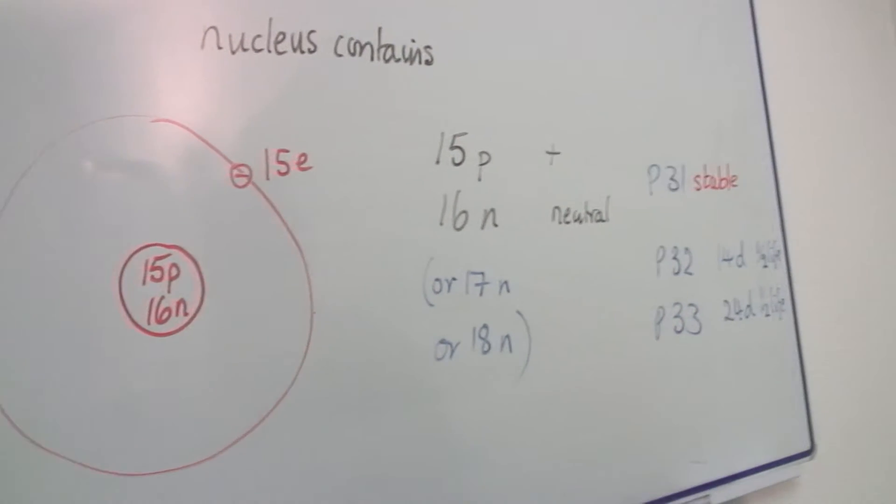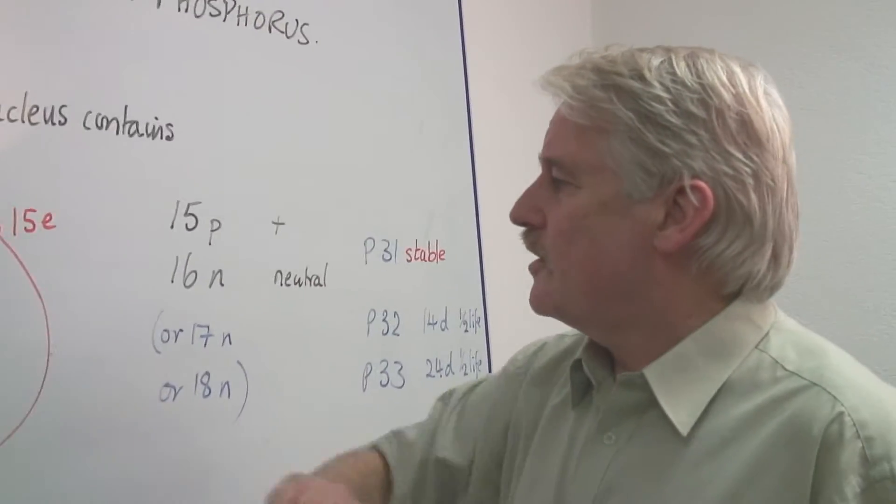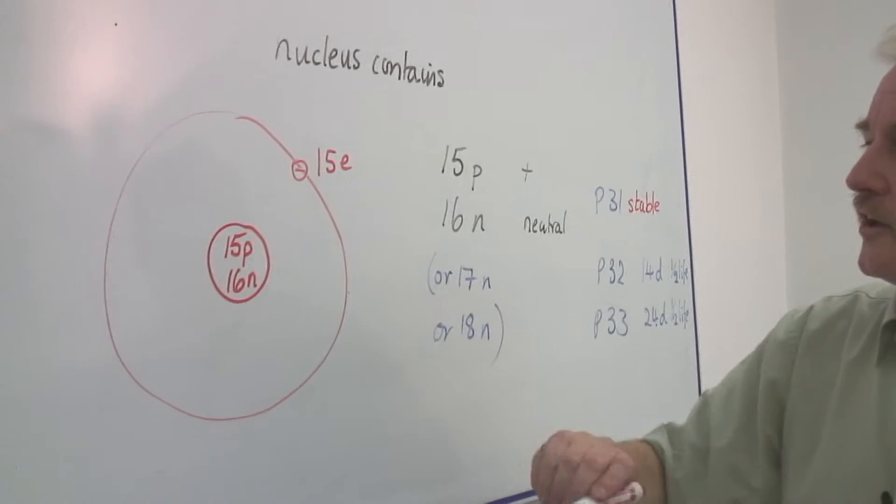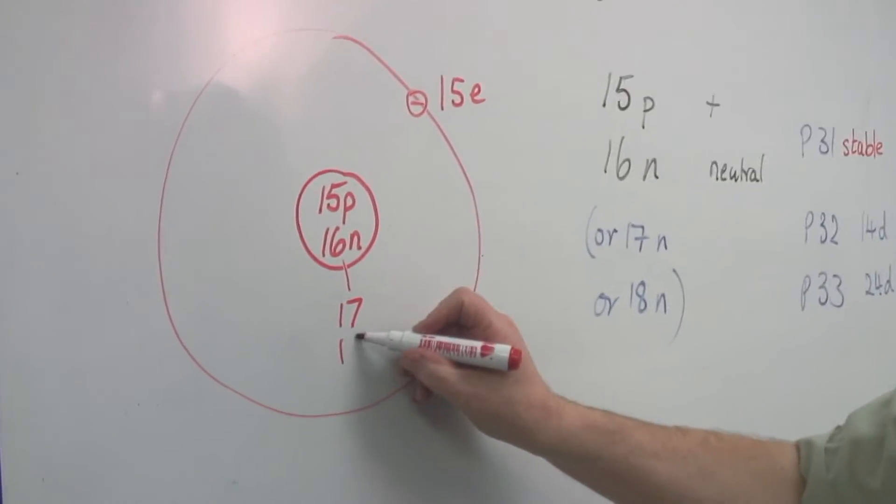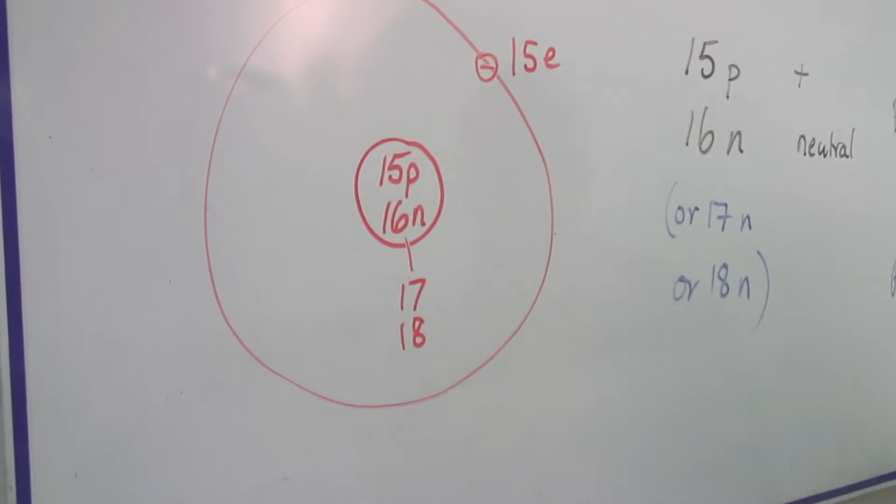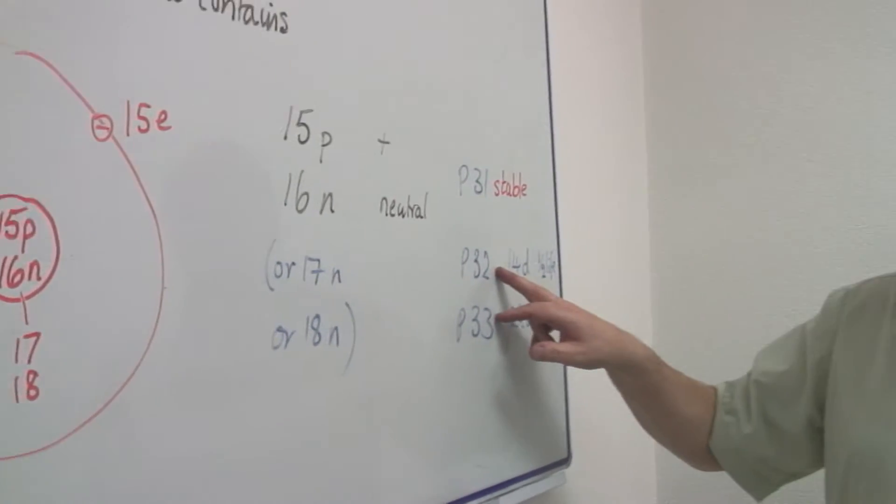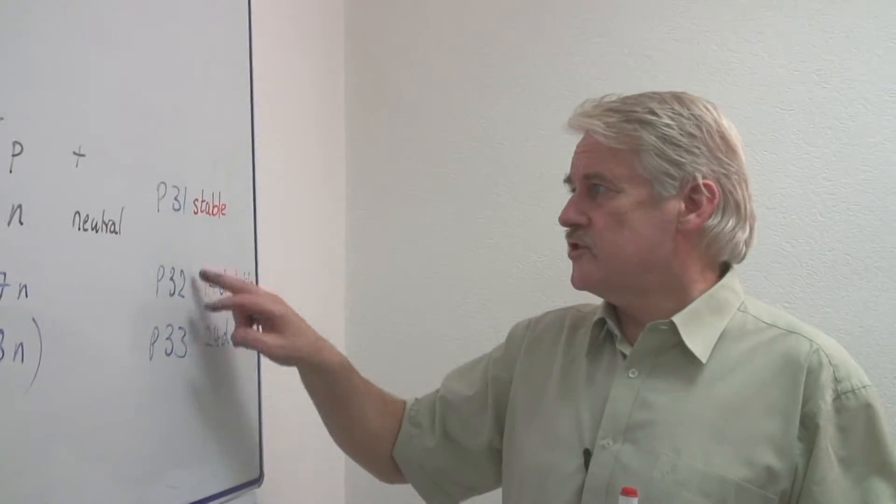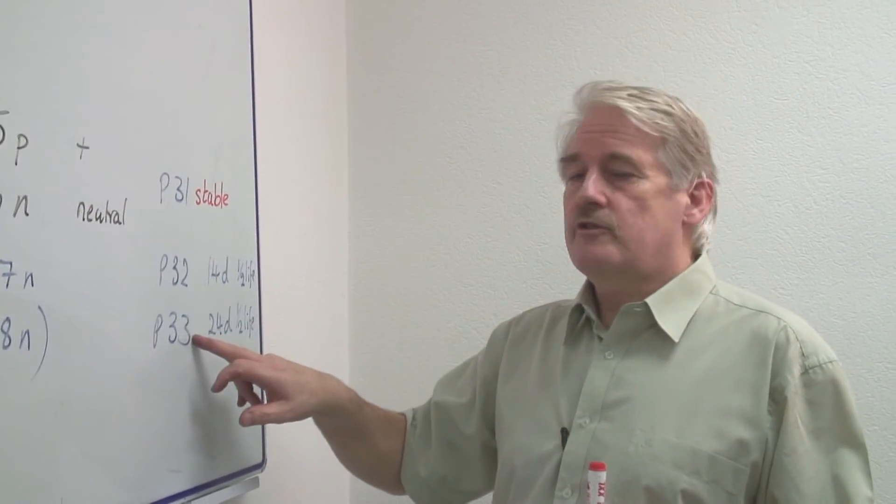The difference between the different isotopes is that instead of there being sixteen neutrons, there can also be seventeen or eighteen neutrons in the nucleus. This means we have three types of phosphorus: phosphorus-31, phosphorus-32, and phosphorus-33.